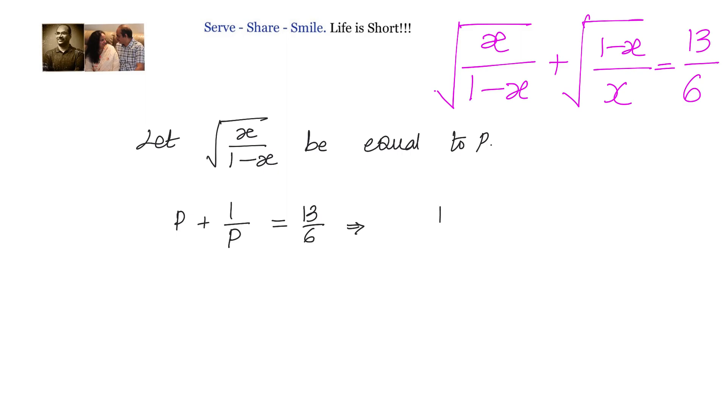Now, let us take LCM. We have p square plus 1 divided by p is 13 by 6, or we can write it as cross multiplying 6 p square plus 6 equals to 13 p. Now we can get everything to left hand side and write it as a quadratic equation 6 p square minus 13 p plus 6 equals to 0.